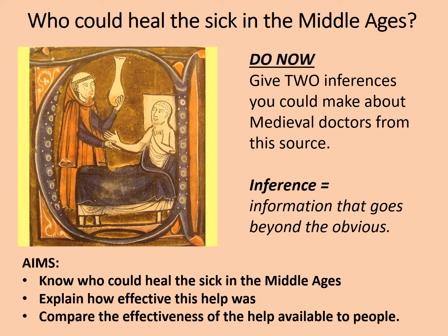Here's a do-now task based upon some exam skills. Give two inferences you could make about medieval doctors from this source. An inference is where you get information from a source that goes beyond the blindingly obvious. For example, if I said there appears to be one man holding another man's hand, that's not an inference — that's too obvious. You've got to go for information you can draw from this that isn't just there. Pause the video while you have a go at this, and then we'll have a look at an example answer.